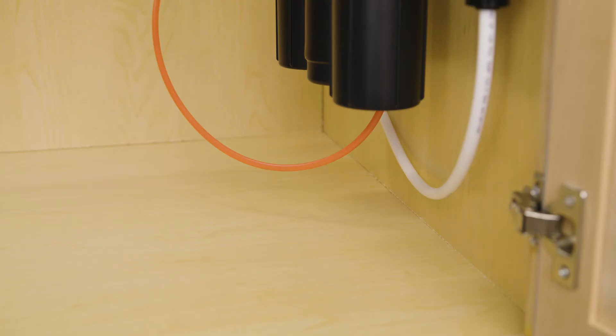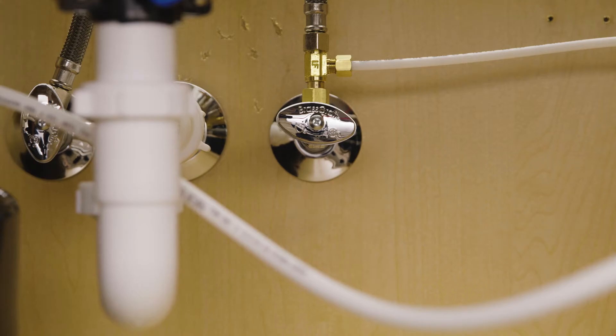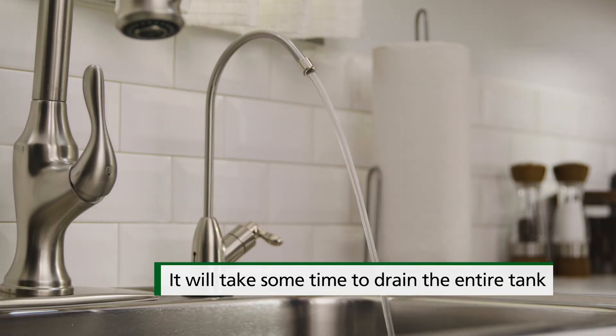Grab a towel to catch any water that may come from your system during the replacement process. First, turn off the cold water valve under the sink and release the pressure from the system by turning on the dedicated faucet.